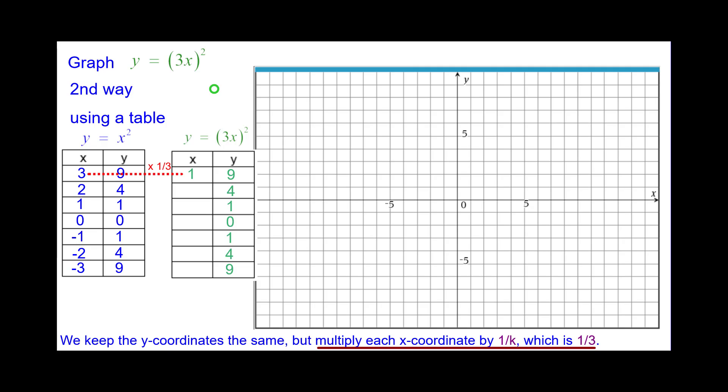The first point, 3 times 1 third will be 1, so we'll plot the point 1 comma 9. 2 times 1 third is 2 thirds, so we'll plot 2 thirds comma 4. 1 times 1 third, 1 third comma 1. And the origin stays the same.